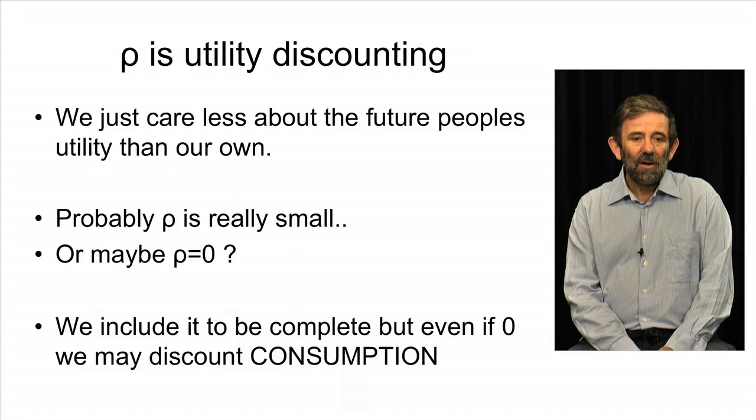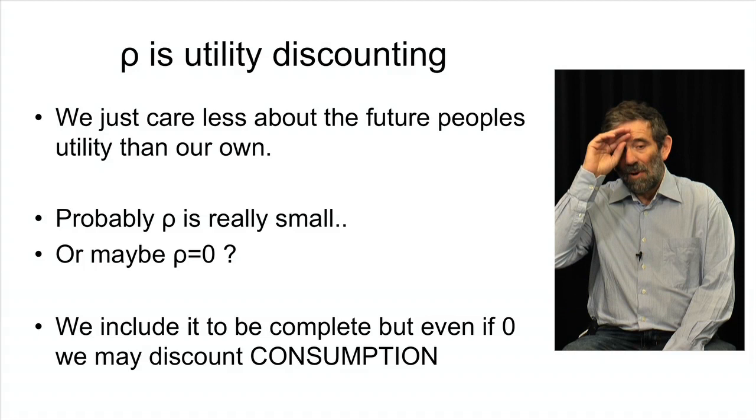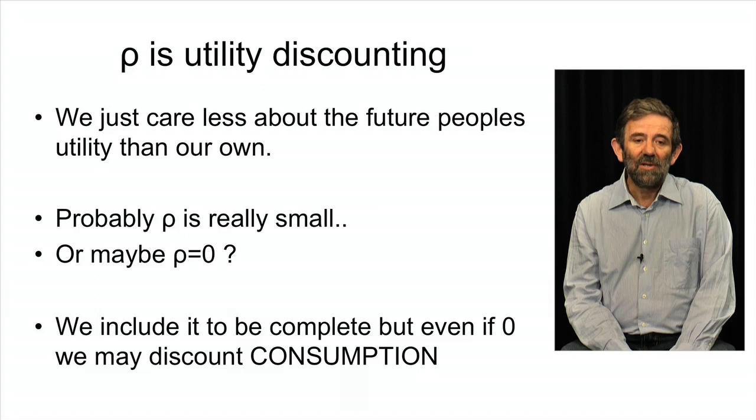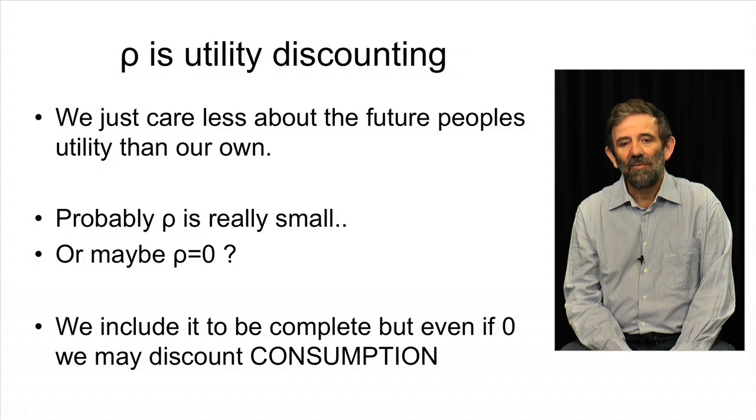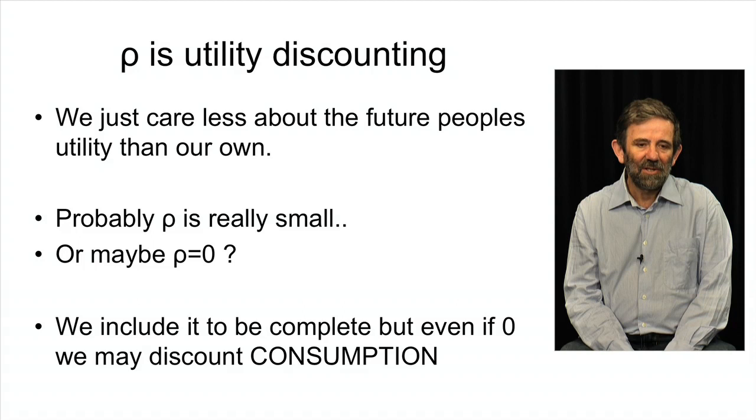Now, some people think that ρ should perhaps be zero, or at least very, very small. Many people think in fact that we should care more about our children and future generations than about ourselves. And there are many philosophical arguments about this. There is, of course, a small risk each year that life on Earth disappears for other reasons than our own doing, and so that is sometimes cited as an argument for ρ, but it would be a ρ that is incredibly small.